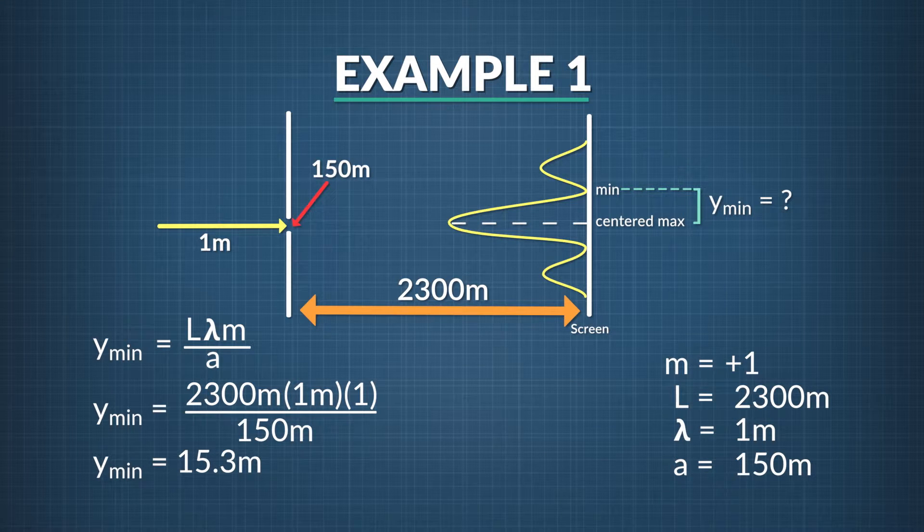That means the first minimum in the wave interference pattern on the screen is 15.3 meters above the pattern's center. For an interference pattern made with sound waves, this minimum would be a dead spot, the absence of sound.